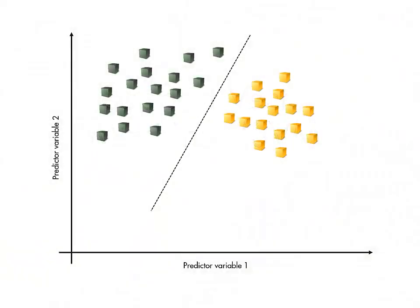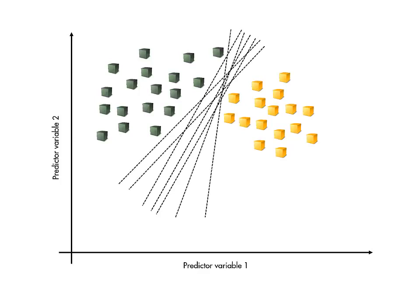A simple way to classify observations into two classes is to draw a linear boundary between them. However, even if the data is perfectly separable in this way, there are many possible linear boundaries that could be used. Which is the best?